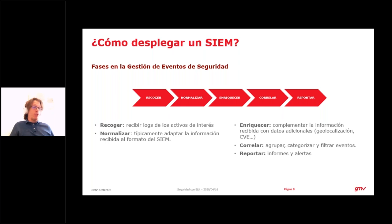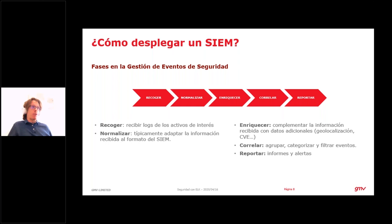La primera fase necesaria de un sistema SIEM es recoger información. La mayoría de los sistemas SIEM son capaces de recoger logs de los activos de interés: servidores, dispositivos, sistemas Linux y Windows, cortafuegos, sistemas de seguridad que generalmente emiten eventos ya muy valiosos. Pero podemos ir más allá y pensar también en información de tráfico de red, flujos de tráfico. Cuanto más capaces seamos de recoger todo este tipo de información, más potencia tendrá nuestro sistema SIEM.